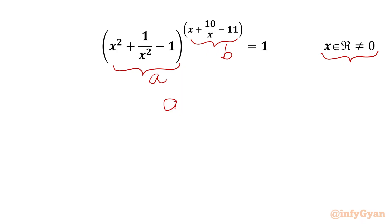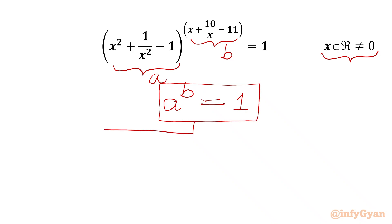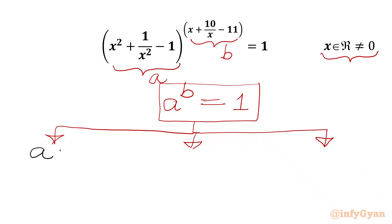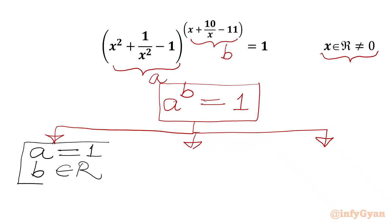So our form will become a to the power b equal to 1. We consider 3 different cases to solve such exponential equations. In case 1, if our base a equals 1 and power b belongs to real numbers, then we will get RHS equal to 1.